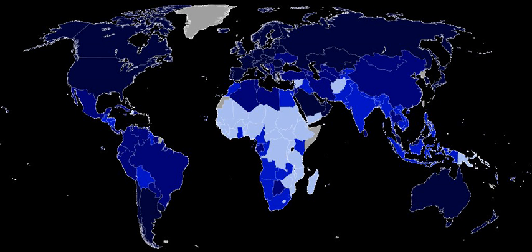GDP Index = (log(GDPpc) − log(100)) / (log(40,000) − log(100)). Other organizations and companies may include other factors, such as infant mortality, which produces a different HDI.